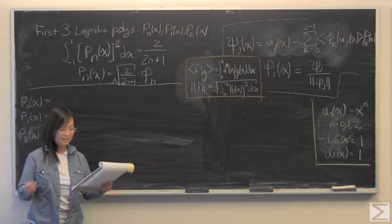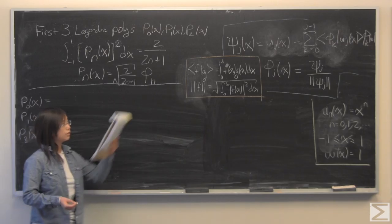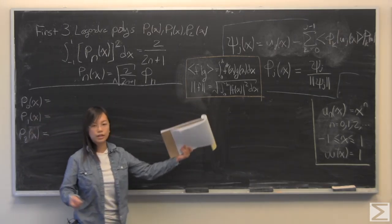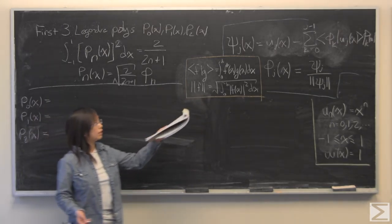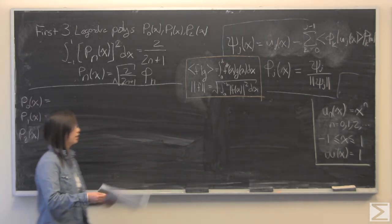The steps that we're going to take, and we are going to take these three times for each Legendre polynomial, is to first look at psi of j, where j is 0, 1, or 2, in this case of x, and we're going to look at them in order. So we're gonna start by looking at psi 0 of x.